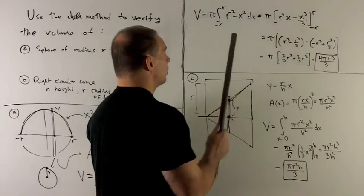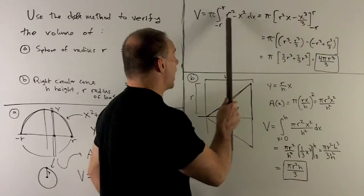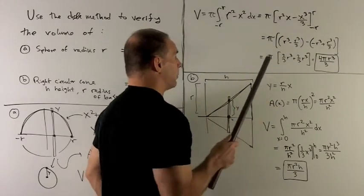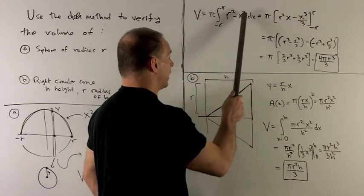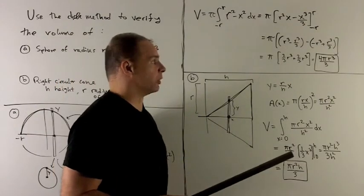Then this, we know how to take the antiderivative of. So r-squared is a constant, so that's just going to be multiplied by x. And then the antiderivative of x-squared is add one, flip it over, x-cubed over three.